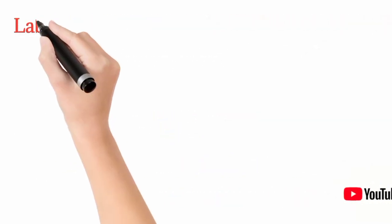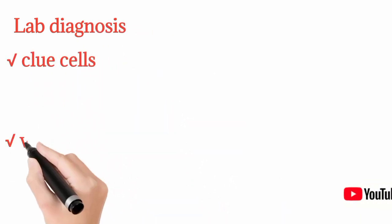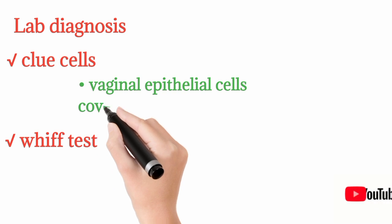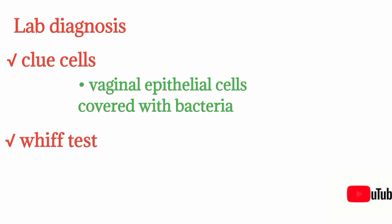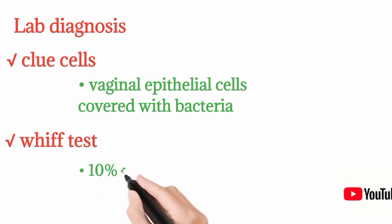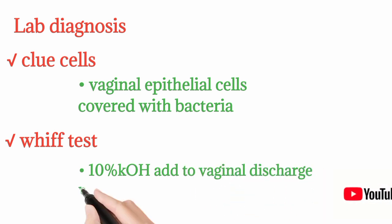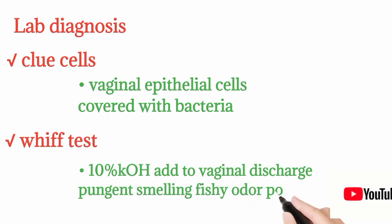Lab diagnosis includes two tests: clue cells and the whiff test. Clue cells are vaginal epithelial cells covered with Gardnerella bacteria, visible under the microscope. In the whiff test, 10% potassium hydroxide is added to the vaginal discharge; a positive fishy odor confirms Gardnerella vaginalis.